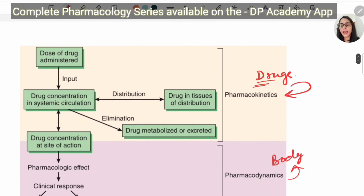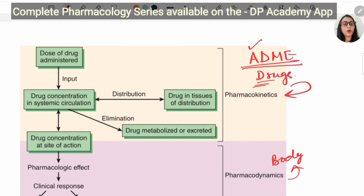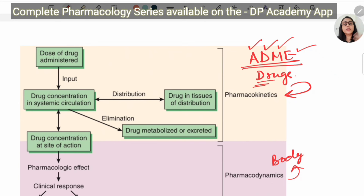Pharmacokinetics involves what is known as the ADME study, which consists of four things: absorption, distribution, metabolism, and excretion of the drug. When we are talking about drugs, the drug gets absorbed, gets distributed, it gets metabolized, and finally it is excreted via urine or by the kidneys.